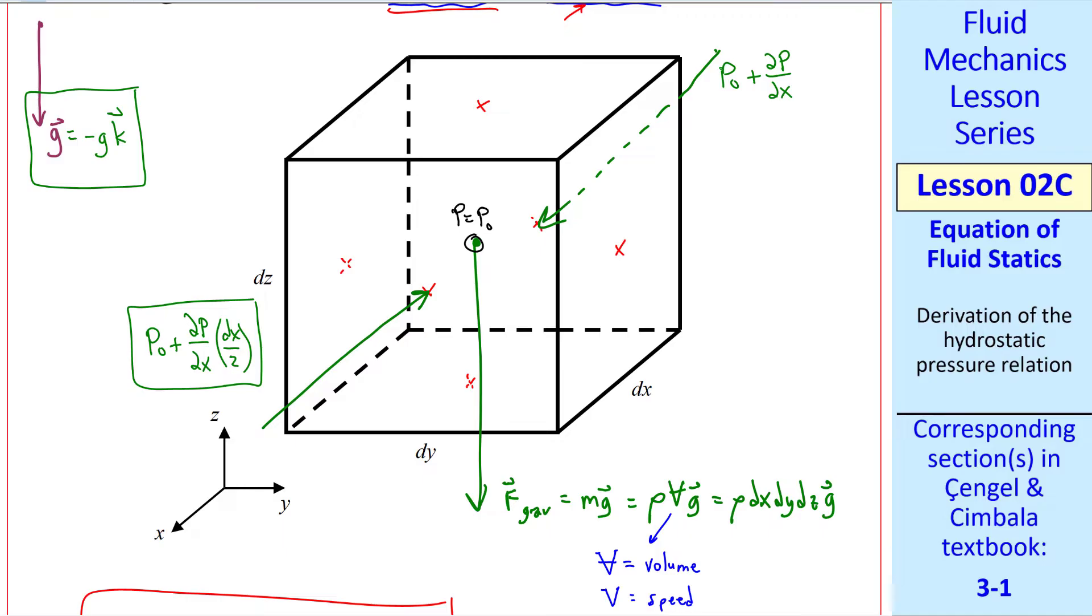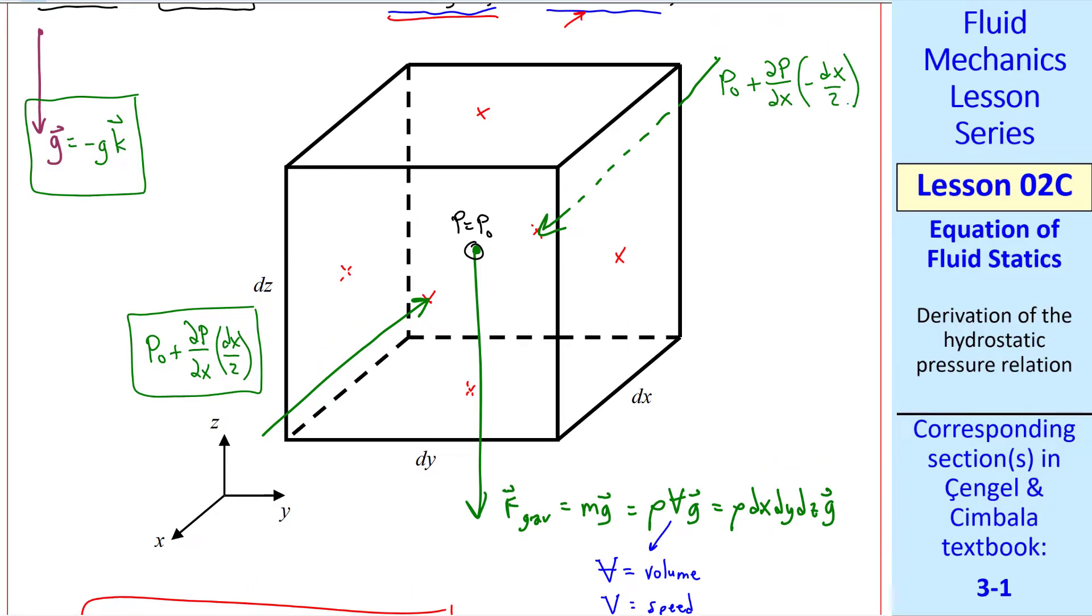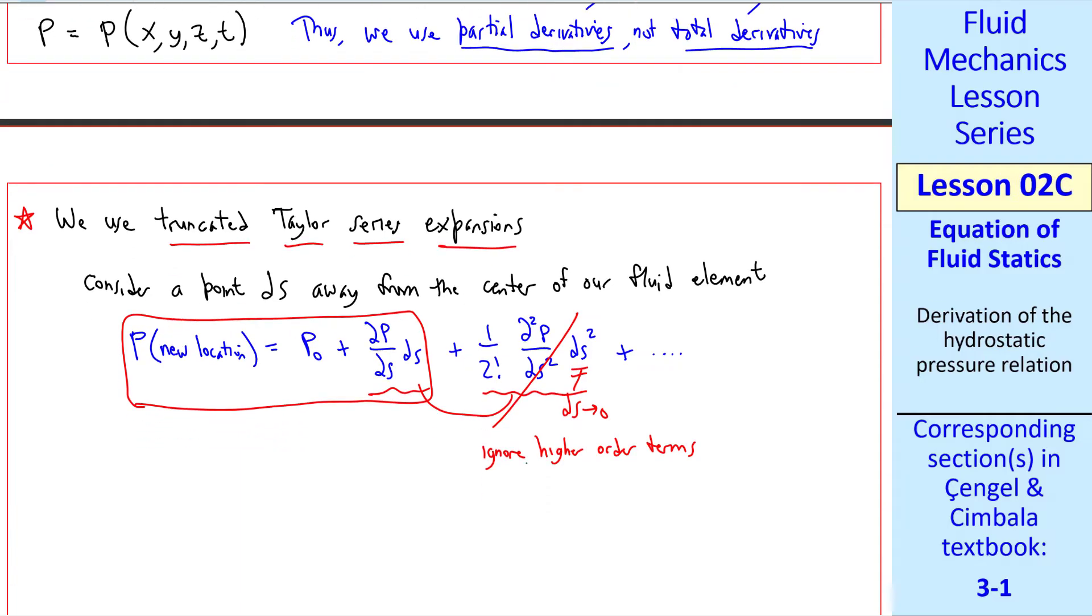Similarly on the back face, the pressure is p0 plus del p del x times negative dx over 2, since we're going in the negative x direction. Let's sum up the two forces in this x direction. By the way, those are the only two forces acting on the front and back surfaces, since there's no shear stresses or shear forces.